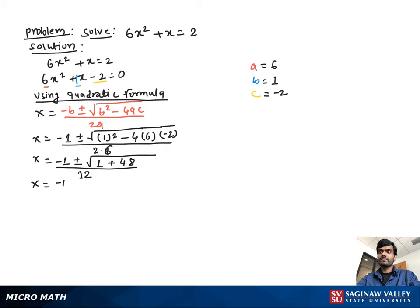Then x will be (-1 ± √49) / 12. Then x will be (-1 ± 7) / 12. Now splitting into two different parts, we get x = (-1 + 7) / 12 or x = (-1 - 7) / 12.